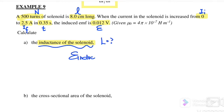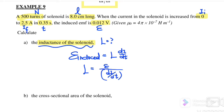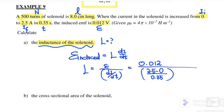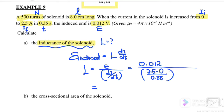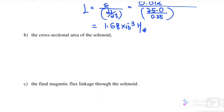First, calculate the inductance of the solenoid. We use: induced EMF equals L times ΔI/Δt, so L equals induced EMF over ΔI/Δt. Substituting: EMF is 0.012 V, ΔI is 2.5 minus 0, and Δt is 0.35 seconds. Therefore, the inductance of the solenoid is 1.68×10⁻³ H.